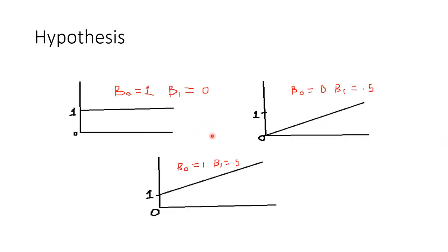Now we can have different kinds of hypotheses. If beta0 is 1 and beta1 is 0, we will have a hypothesis like this—the line is parallel to the x-axis. If beta0 is 0 and beta1 is 0.5, the hypothesis line is like this.